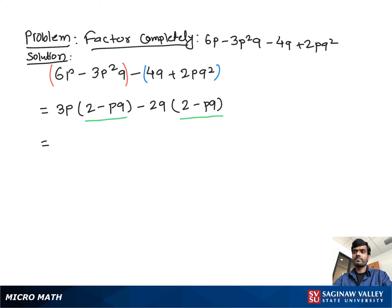Now from both sides we see 2 minus pq as a common factor, so we take it out as a common factor. Then we have left 3p minus 2q, and this is our final complete factorization.